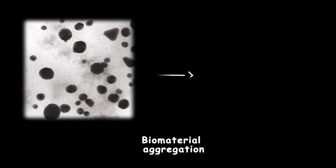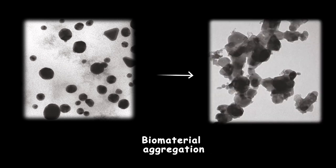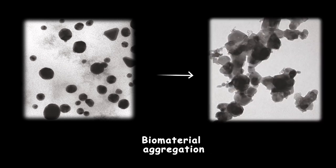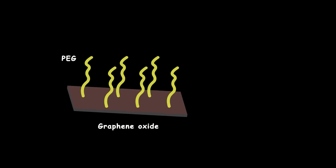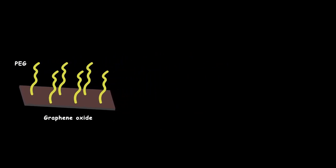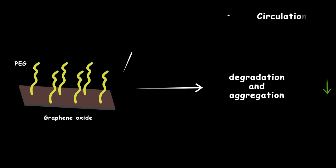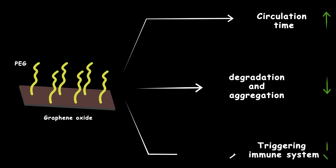We observe this aggregation most of the time when we want to introduce nanomaterials or some drugs to a biological system. The most common solution to this problem is what we call pegylation, which means we add polyethylene glycol, or PEG, to the surface of our graphene oxide. This would typically slow down their aggregation and degradation, as well as elimination by kidneys, which increases the circulation time in the body. Plus, the covalent attachment of PEG to a material can mask the agent from the host immune system as well.